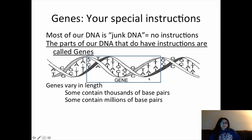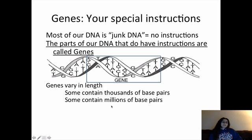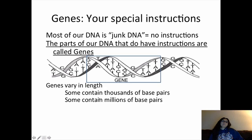You've probably heard it before: 'I got that gene from my mom, I got that gene from my dad.' When you're talking about a gene, you're talking about a specific section of DNA that has instructions for building proteins, not junk DNA. Genes can be different lengths — there are genes for eye color, hair color, widow's peak, the shape of your nose, all these different things. The gene for eye color might be thousands of base pairs long, while the gene for a widow's peak might be millions of base pairs long.